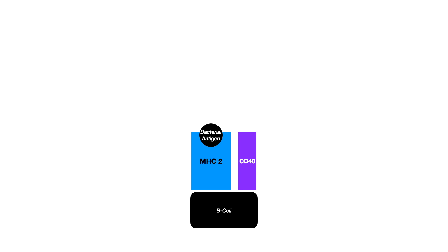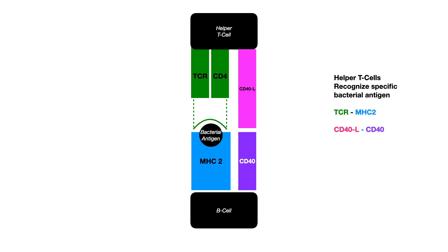MHC2 has a bacterial antigen. In this case it's a B cell, and the expression of that B cell is going to have a marker for CD40. A helper T cell comes along with its T cell receptor and expresses the CD4 marker — which you already know because two times four equals eight. The T cell receptor interacts with MHC2 to recognize the bacterial antigen, and in this interaction CD40 interacts with CD40 ligand. That's easy to remember because it's literally CD40 and the ligand for CD40, making the co-stimulatory signal here a bit easier to memorize.